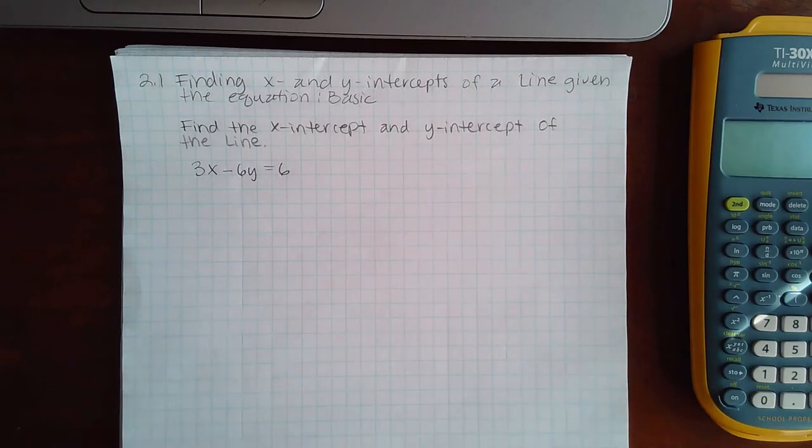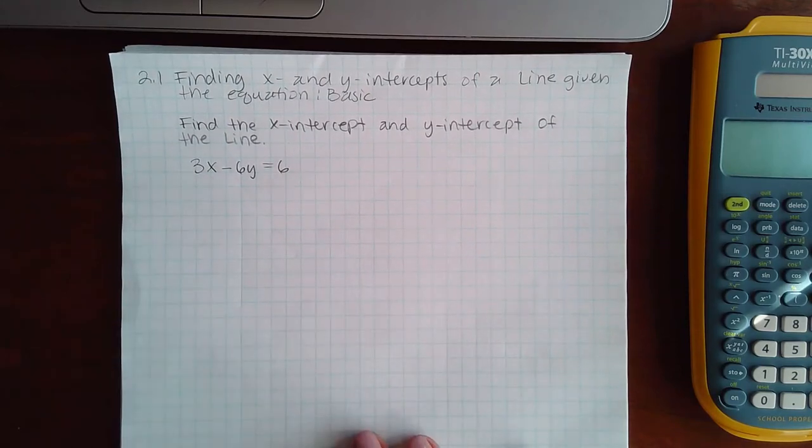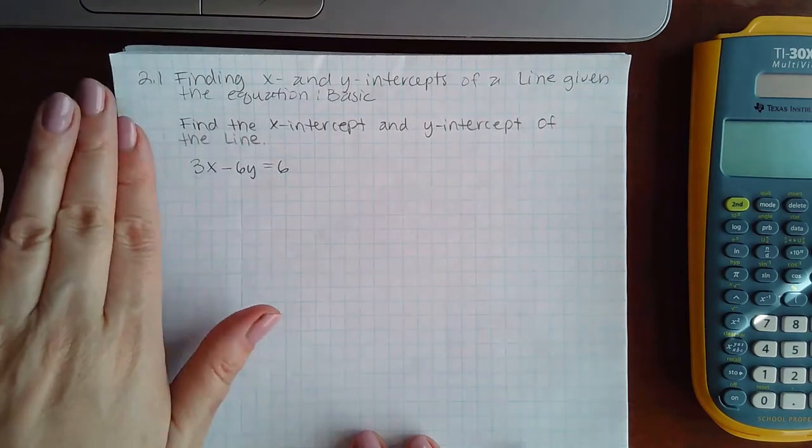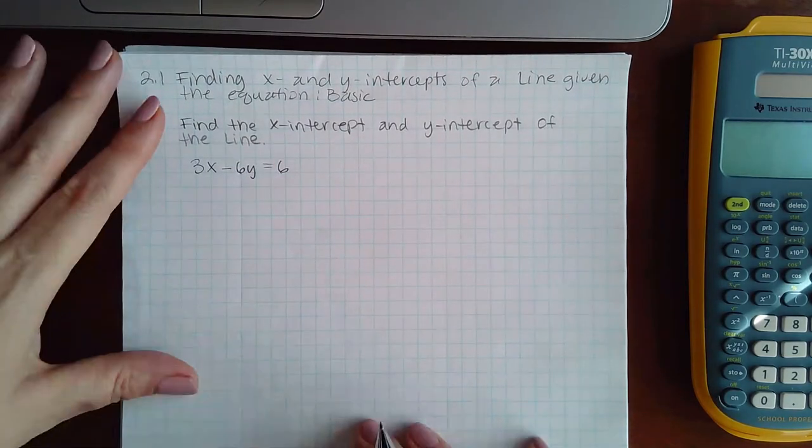This problem is finding x and y intercepts of a line given the equation. Remember when we were doing the topic in standard form - this is in standard form. You have x and y on the left-hand side and the constant on the right-hand side. That is standard form.